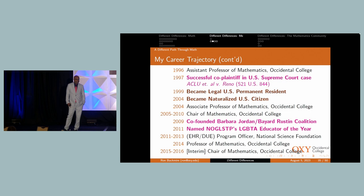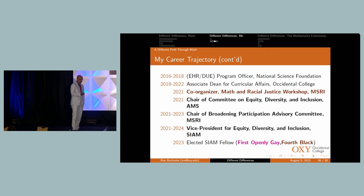The QRD actually was a successful co-plaintiff in a U.S. Supreme Court case, which unless there's some legal scholars in the room, you may not recognize ACLU versus Reno, but what it's known for is that the Supreme Court struck down the Communications Decency Act of 1996 in a 7-2 decision, ruling that Congress could not pass a law regulating the display of excretory or sexual organs on the internet. Since they did that, of course, that never appears on the internet anymore. But anyway, that's a little piece of my claim to fame. 1999, I became a legal U.S. permanent resident. 2004, got tenure, became a U.S. citizen. Then later became the chair of the math department at Occidental College. I founded a non-profit called the Barbara Jordan-Bayard Rustin Coalition. It's a local black LGBT advocacy organization in Los Angeles. I won an award from the National Organization of Gay and Lesbian Scientists and Technical Professionals. In 2011, did my first stint at the National Science Foundation, came back to Oxy, got promoted, became a chair again.